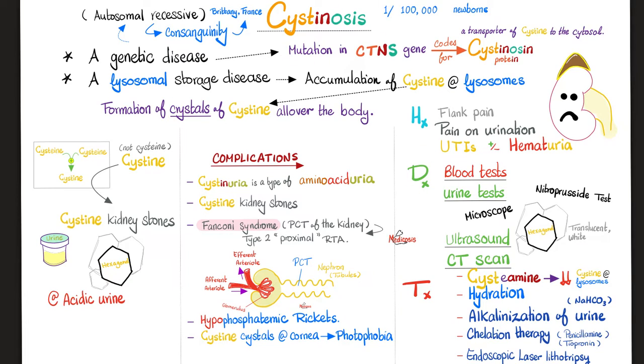How can I diagnose cystinosis? Blood tests, urine tests to look for the stones, ultrasound and CT scan to visualize the stones.